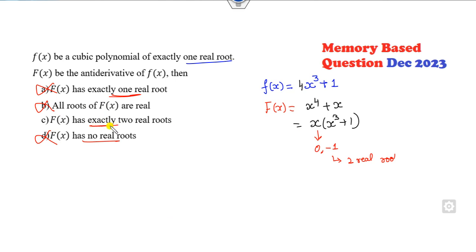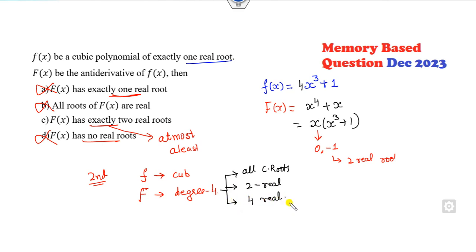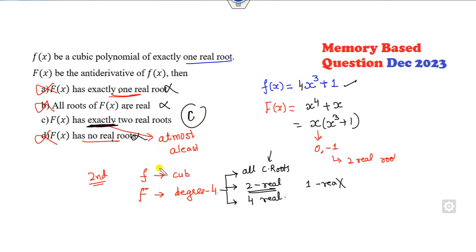The second approach: if F is a cubic polynomial, capital F (the anti-derivative) is degree 4. Once it's degree 4, either all roots are complex, or it has two real roots, or four real roots — because complex roots always occur in pairs. So one real root is not possible (that would mean three complex roots). 'Exactly one real root' is cancelled again. 'All roots are real' may be possible but is not always true. 'No real root' — not possible. So the right answer is C. You can verify whether it's 'exactly,' 'at most,' or 'at least' from your question options.